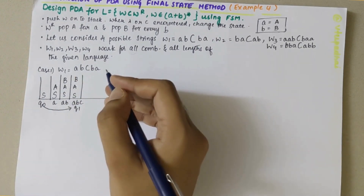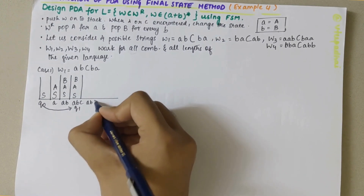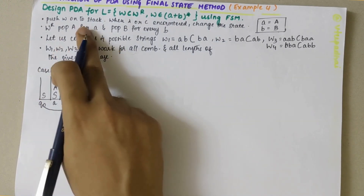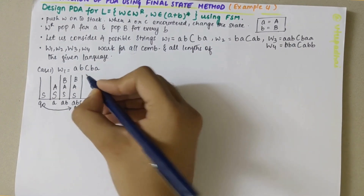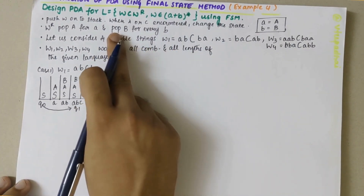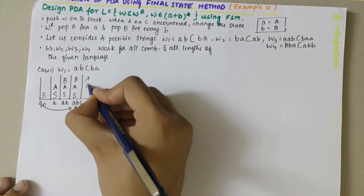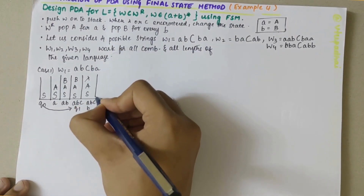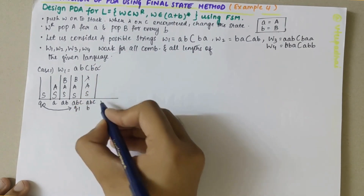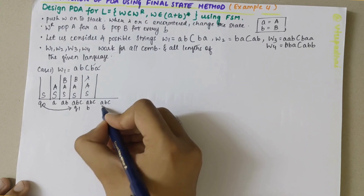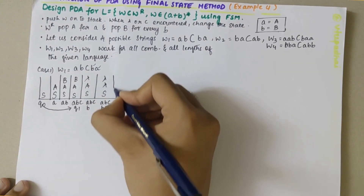Whenever C or lambda is encountered, I need to change the state and whatever is on top of stack remains as it is — B is kept as it is. Next I have B in the W^R part, so we need to pop elements. Whenever B is being encountered, we pop capital B, replacing it with lambda. Then A is encountered — popping capital A, replacing it with lambda.